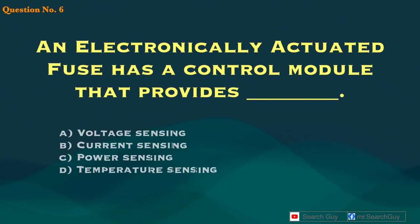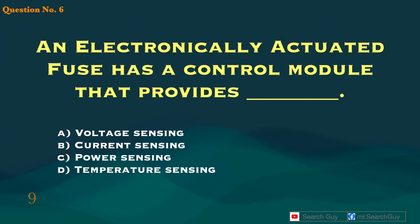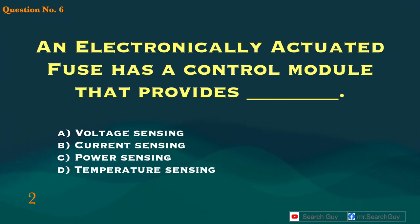Question 9. An electronically actuated fuse has a control module that provides blank. A. Voltage sensing. B. Current sensing. C. Power sensing. D. Temperature sensing. Answer: B. Current sensing.